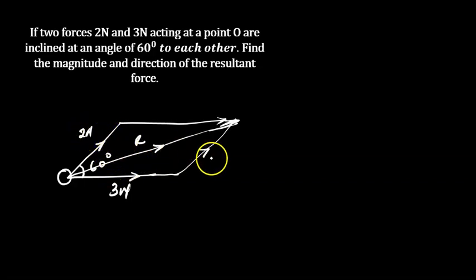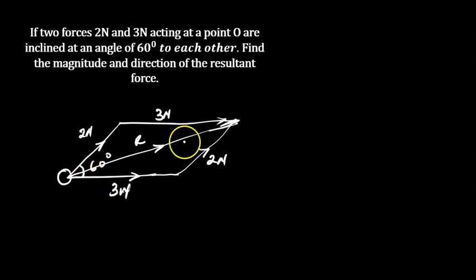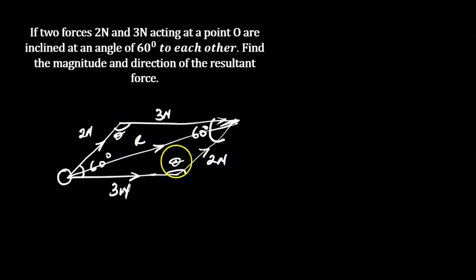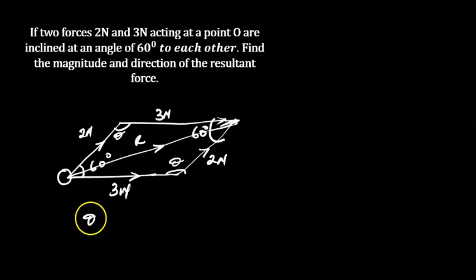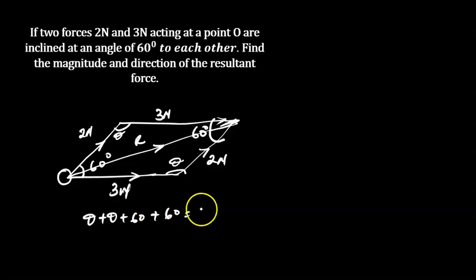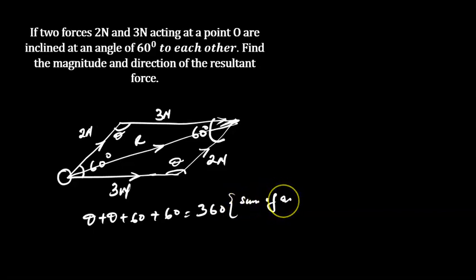If I have two newtons here, I'll have two newtons on the opposite side. If I have three newtons here, I'll have three newtons on the opposite side. If I have 60 degrees on this side, the directly opposite side will also be 60 degrees. Here I'll have angle theta, and the opposite corner will also be theta. The sum of angles in a parallelogram equals 360, so theta plus theta plus 60 plus 60 equals 360.